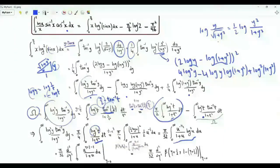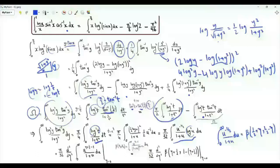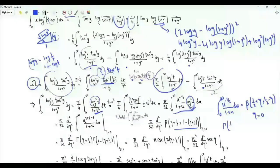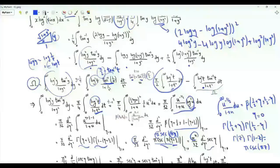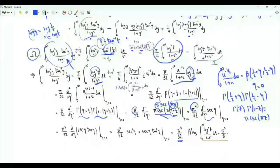This integral can be represented in terms of the Beta function. For Re(z₁) > 0 and Re(z₂) > 0, B(z₁, z₂) equals the integral from 0 to ∞ of u^(z₁-1)/(1+u)^(z₁+z₂). Without the logarithm, this integral is B(1/2 + η, 1/2 - η) at η = 0. To obtain (log u)², we differentiate the beta function twice with respect to η, then set η = 0. This Beta function equals Γ(1/2 + η) Γ(1/2 - η) / Γ(1) = 1. By the reflection formula, Γ(η + 1/2) Γ(1/2 - η) = π · csc(π(η + 1/2)) = π · sec(πη). Differentiating twice and evaluating at η = 0 gives π⁴/32, since the second derivative of sec at 0 equals 1.